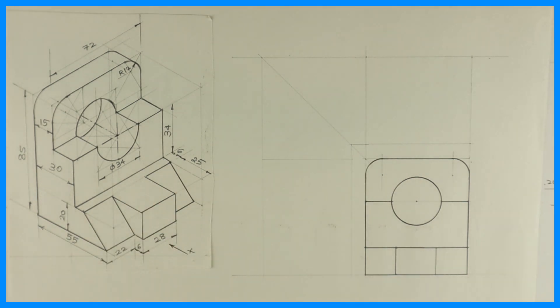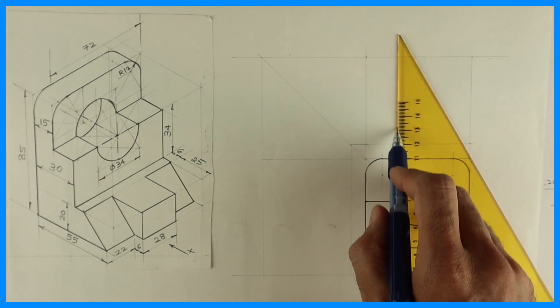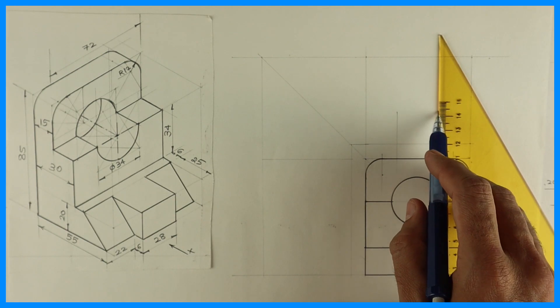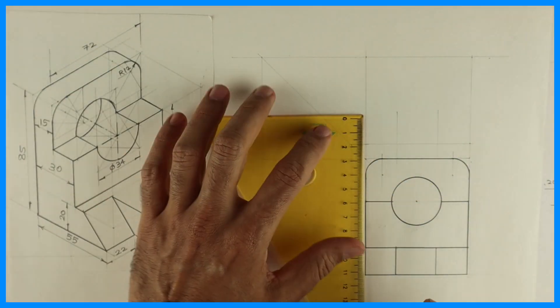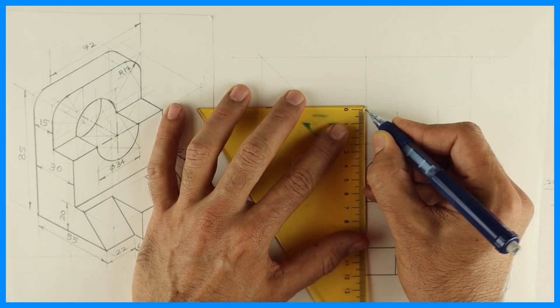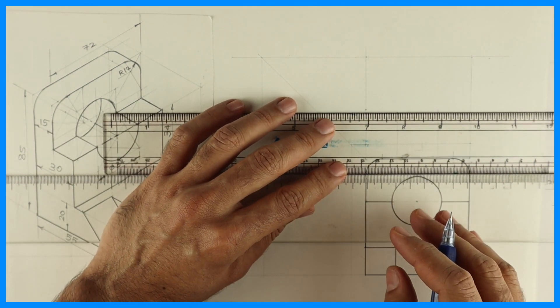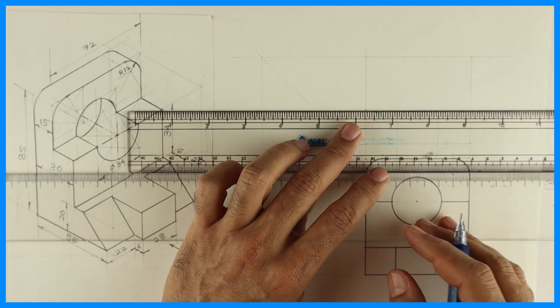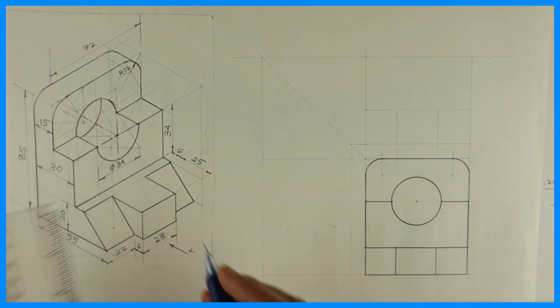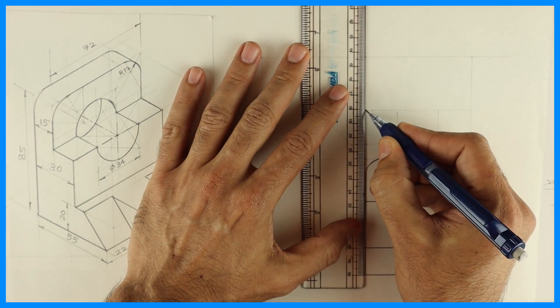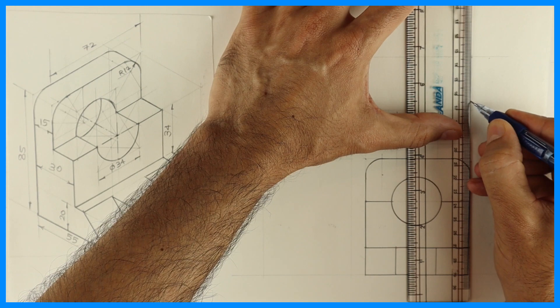Now for top view, we'll see this T portion first. We will draw the T portion. So we'll draw vertical line. Now how much you have to go inside? 25. If you see, they've given 25, and then again you take six up.